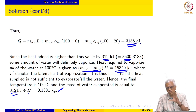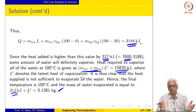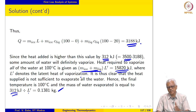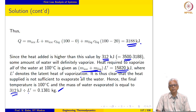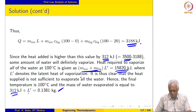The analysis proceeds in almost all examples along the same lines: identify the system, apply first law consistently, and then proceed. Identification of the system, applying first law, and then proceeding is most important. Let us move on to the next example.